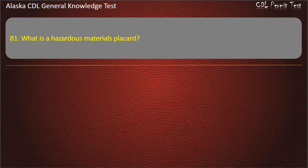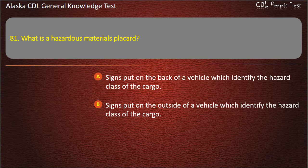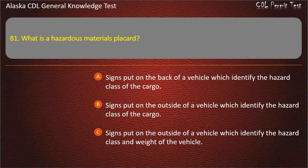Question 81. What is a hazardous materials placard? Signs put on the back of a vehicle identifying the hazard class of the cargo, or signs put on the outside of a vehicle identifying the hazard class of the cargo, or signs identifying hazard class and weight. Answer: Signs put on the outside of a vehicle which identify the hazard class of the cargo.